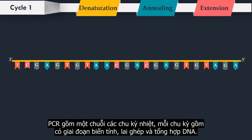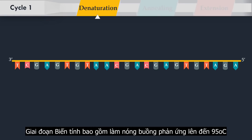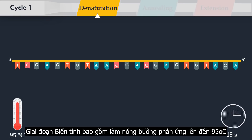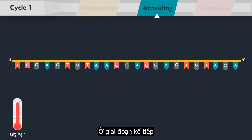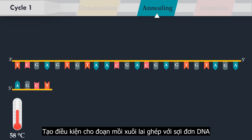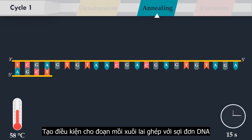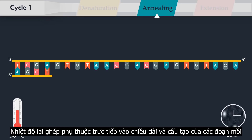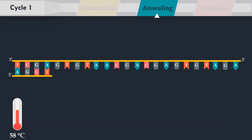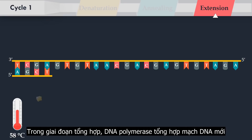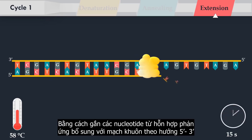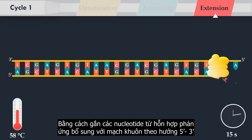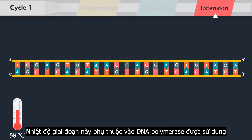PCR consists of a series of thermal cycles, with each cycle consisting of denaturation, annealing, and extension steps. The denaturation step consists of heating the reaction chamber to 95 degrees Celsius, used for denaturation of the double-stranded DNA template. In the next step, the reaction temperature is lowered to 58 degrees Celsius, allowing annealing of the forward primer to its complementary part of the single-stranded DNA template. The annealing temperature relies directly on the length and composition of the primers. In the extension step, DNA polymerase synthesizes a new DNA strand complementary to the DNA template strand, by adding free nucleotides from the reaction mixture that are complementary to the template in the 5' to 3' direction. The temperature at this step depends on the DNA polymerase used.